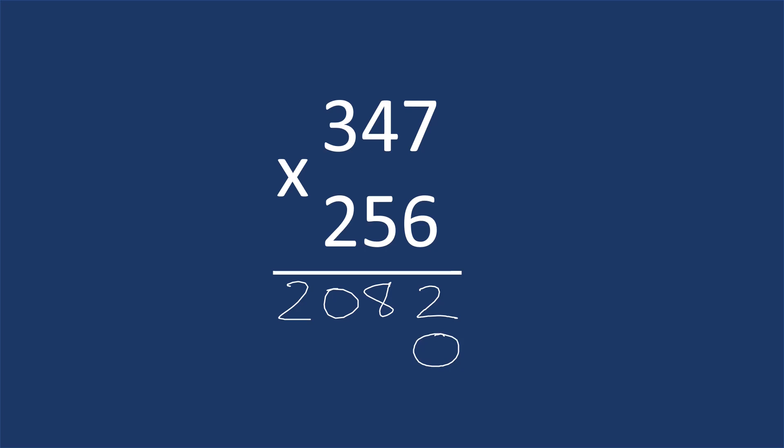Alright, now we're going to start at the 5. We do 5 times 7. 5 times 7 is 35, so put down the 1's digit, 5. Carry the 3. Okay, that was 35. Now we do 5 times 4, which was 20, plus the 3 that we carried, so 23. Put down the 3 here, carry over the 2.